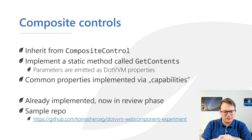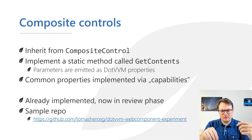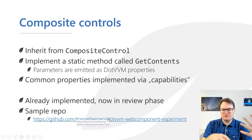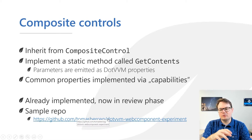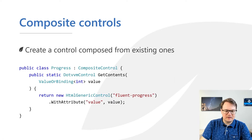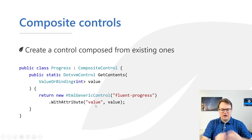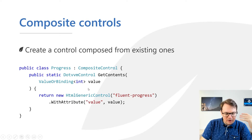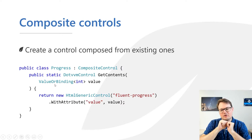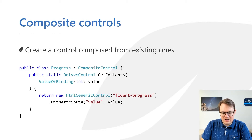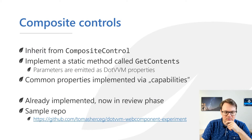To use composite controls, you inherit from CompositeControl — a new type — and implement the static GetContents method. It emits DotVVM properties from the method arguments. There's also a sample repo with experiments using Fluent UI, since this method is great for building wrappers over existing DotVVM controls or HTML elements. For example, I'm creating a statically-typed DotVVM component wrapping Fluent Progress — it knows the value property type, whether it supports binding, and renders the HTML so Fluent UI scripts render it as a progress bar.